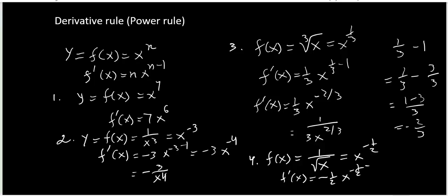Negative half minus 1, the same way just like the previous example, will be negative 1 half minus 2 halves, which equals negative 3 halves. So you get negative 1 half x to the negative 3 half. If you want to write this as a positive exponent, you write negative 1 over 2 x to the 3 half.